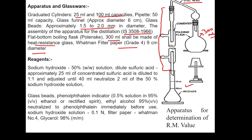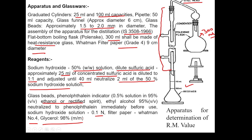Reagents required include sodium hydroxide 50% solution prepared weight by weight, and dilute sulfuric acid prepared by diluting approximately 25 ml of concentrated sulfuric acid in a 1:1 ratio, then adjusting so that 40 ml of it neutralizes 2 ml of 50% sodium hydroxide solution. Other reagents include glass beads, phenolphthalein indicator as a 0.5% solution in 95% ethanol, neutralized ethyl alcohol (95%), and 98% glycerol for saponification.